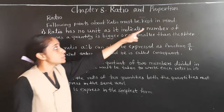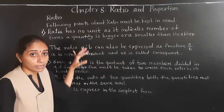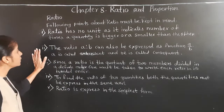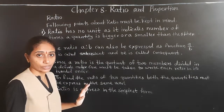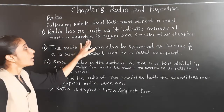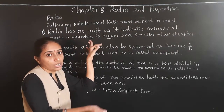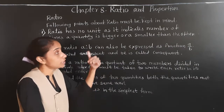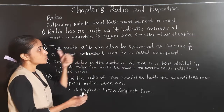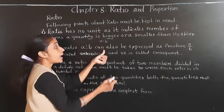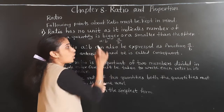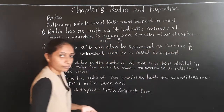Following points about ratio must be kept in mind. First: ratio has no unit, as it indicates the number of times a quantity is bigger or smaller than another. Second: the ratio A is to B can also be expressed as a fraction A upon B.